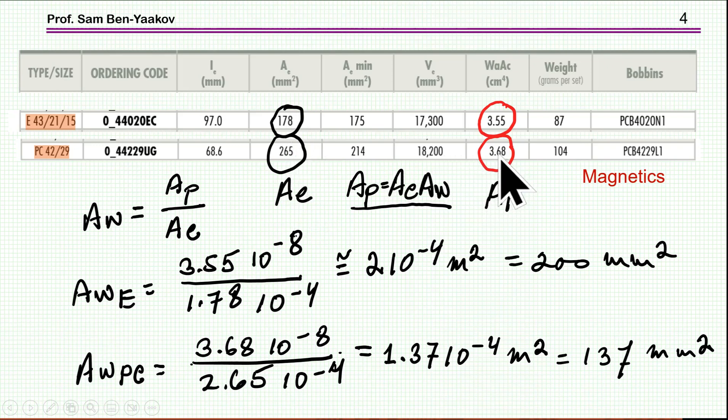Then I have a very important parameter here, which is the AP, which is the product of the cross-section area of the core and the winding area of the core. They are giving it as 3.55 and 3.68, which is very close. According to the AP design method, if the AP is the same, then these two cores are applicable for same specifications and we are going to see that.